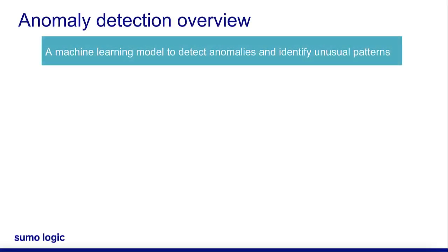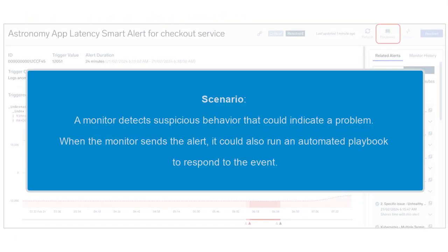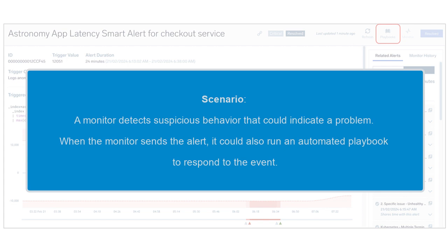Anomaly monitors leverage a machine learning model to detect anomalies and identify unusual patterns. The output of the machine learning model are baselines for normal behavior in the form of lower and upper thresholds, such that deviations from these baselines signal unusual activity that should trigger alerts and require an investigation from developers or security engineers. Let's consider a scenario where a monitor detects suspicious behavior that could indicate a problem.